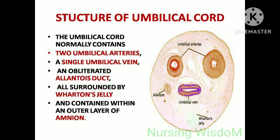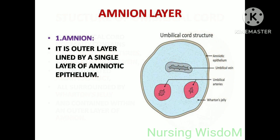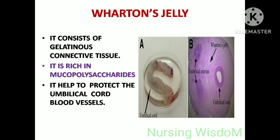Structure of umbilical cord: the umbilical cord normally contains two umbilical arteries, a single umbilical vein, and an obliterated allantois duct, all surrounded by Wharton's jelly and contained within an outer layer of amnion. The amnion is an outer layer lined by a single layer of amniotic epithelium. Wharton's jelly consists of gelatinous connective tissue, is rich in mucopolysaccharides, and helps to protect the umbilical cord blood vessels.